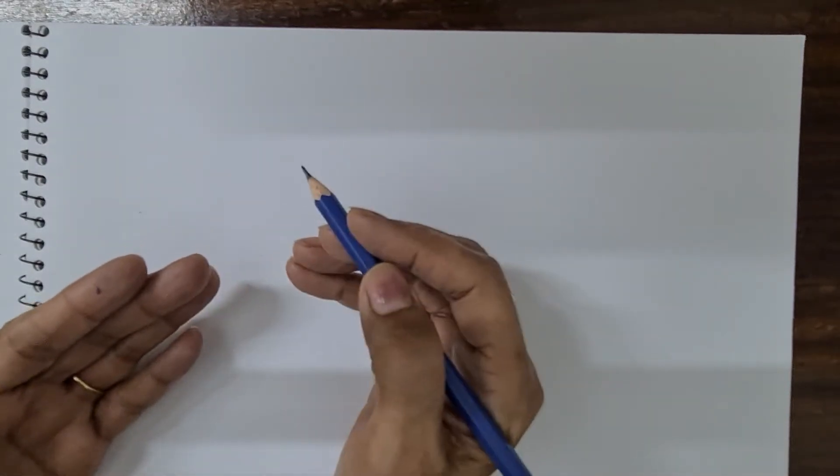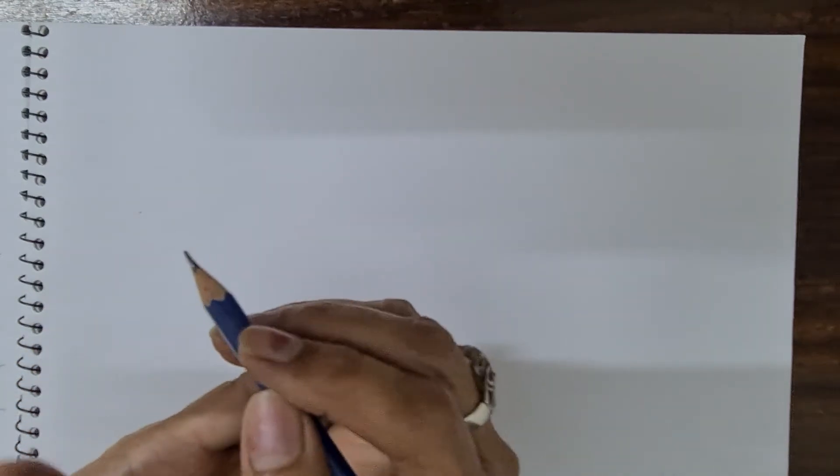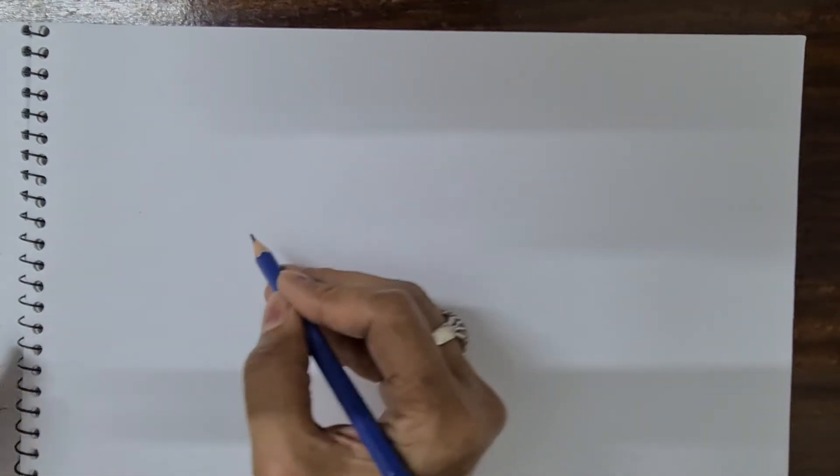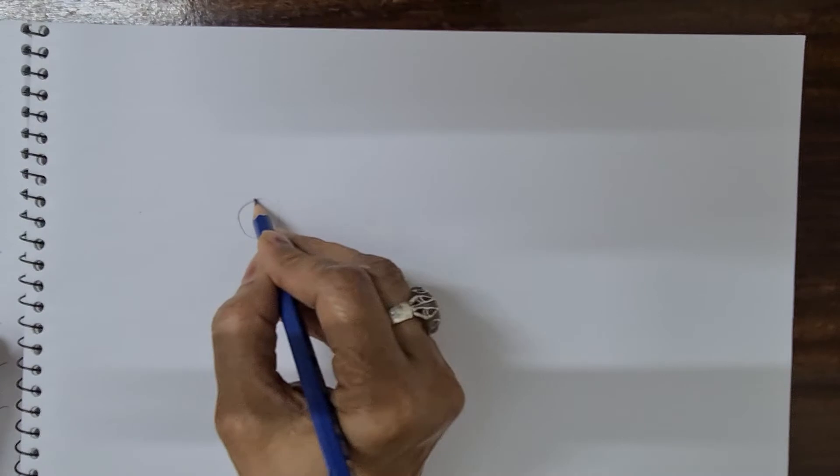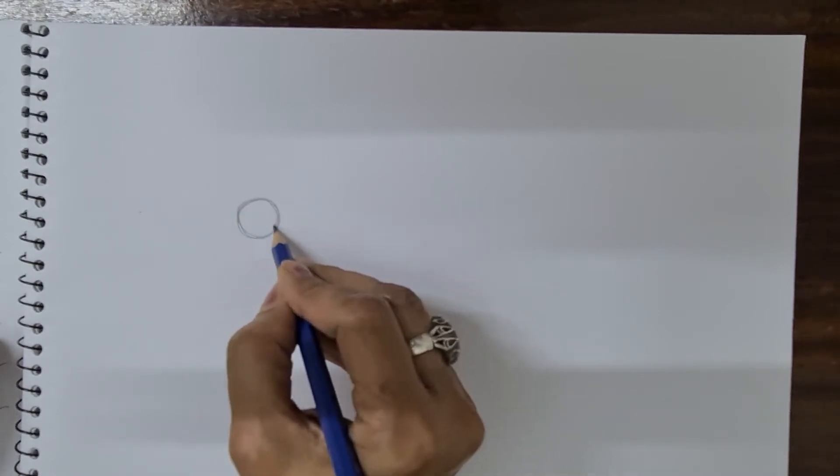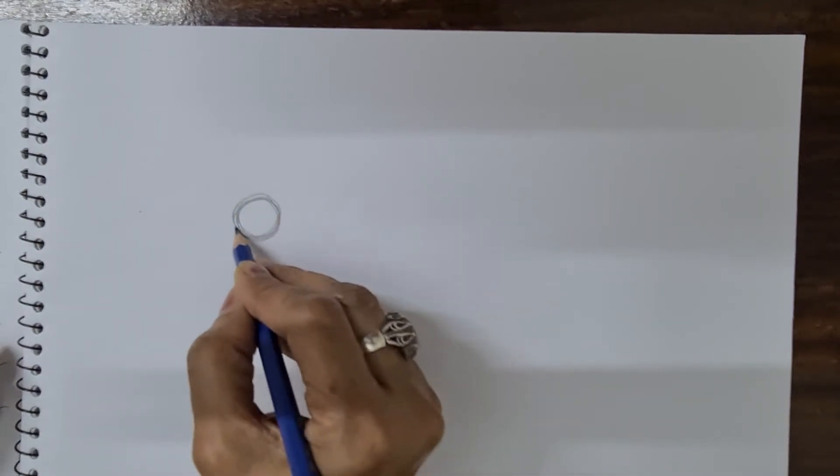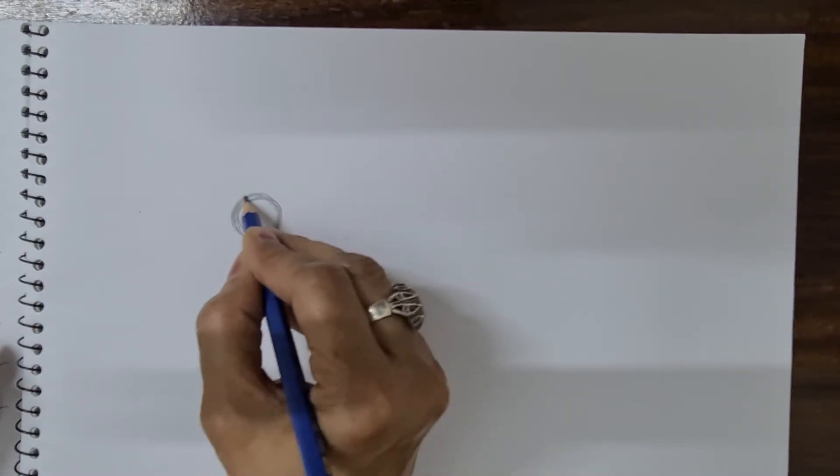Now let's start with the palm of your hand. Just draw small round, round, round circles, like round, round, round.